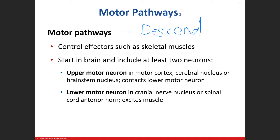In the motor pathway we're going to talk about, the effector organs are going to be skeletal muscles. We're talking about somatic motor neurons. With visceral motor neurons, it'll be either cardiac muscle, smooth muscle, or glandular tissue. But with motor pathways, we're going to deal with at least two neurons.